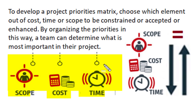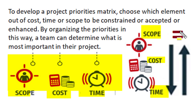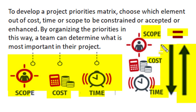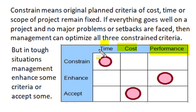The project manager and team must either meet or exceed stakeholder expectations in terms of cost, time and scope. In varying conditions and as per opportunities, the project manager can constrain, enhance or accept any of these three criteria to attain maximum benefit. When criteria are constrained, the original planned specified value — whether budget cost, scheduled time or performance scope — remains fixed. If everything goes well without major setbacks, the project can be executed as per the optimum initial design.